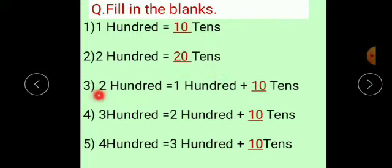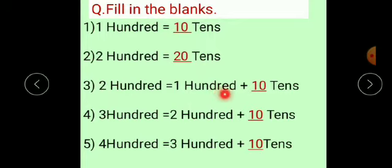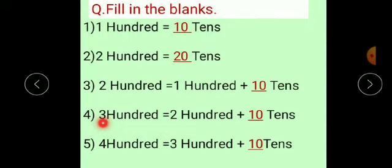Now see here: 200 is equal to 100 plus 100. Instead of 1 note of 200 rupees, we can take 2 notes of 100 rupees. And instead of 1 note of 100 rupees, we can take 10 notes of 10 rupees. So, 200 is equal to 100 plus 10 tens. Likewise, 300 is equal to 200 plus 10 tens.